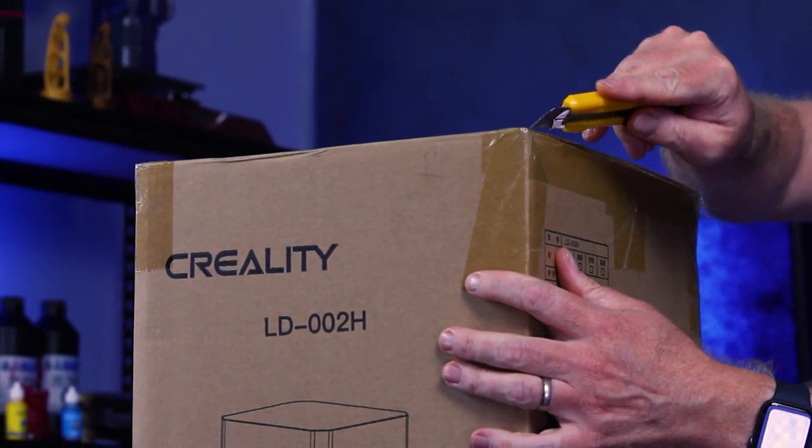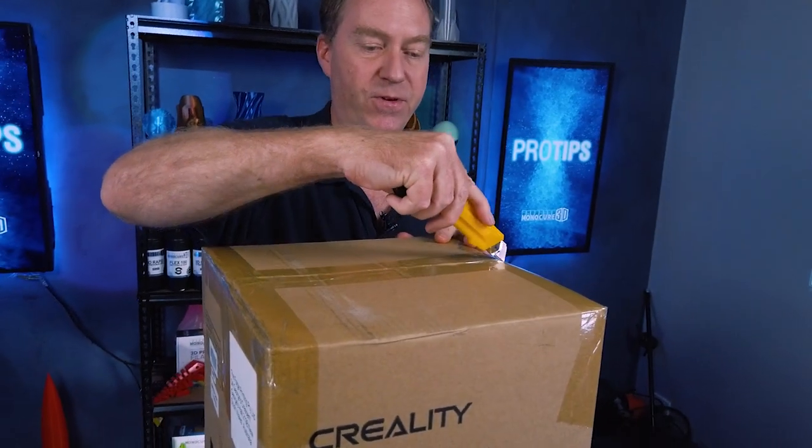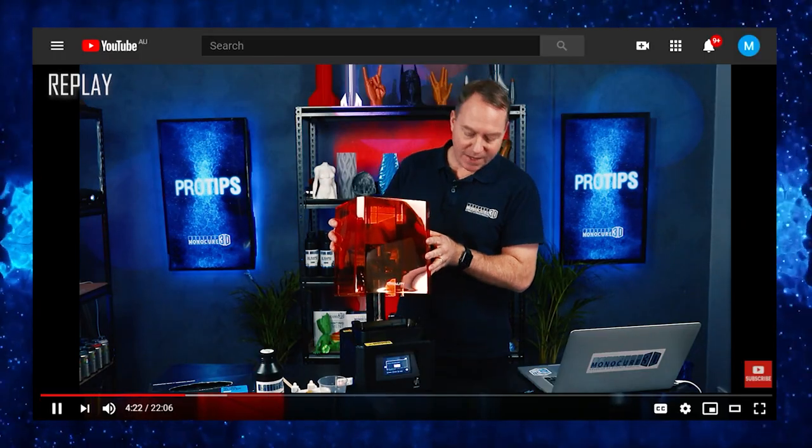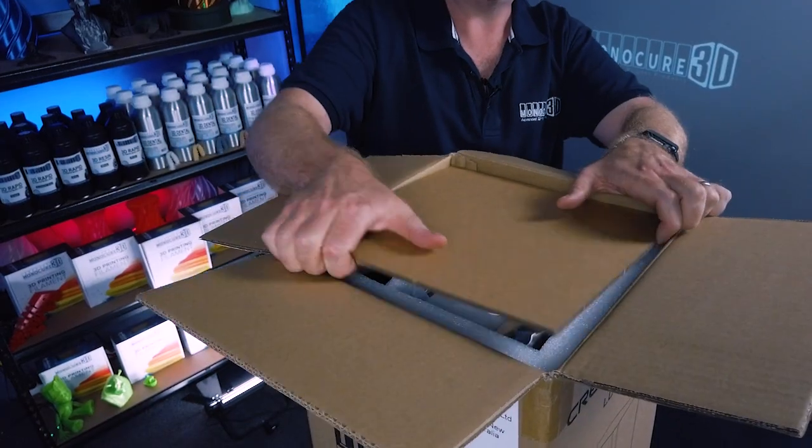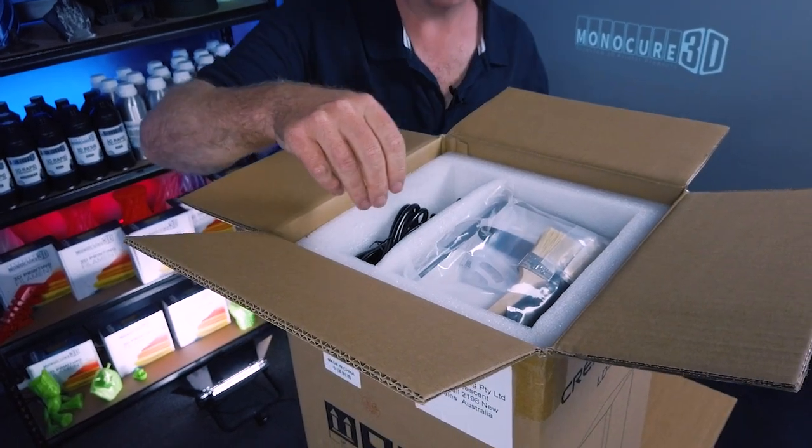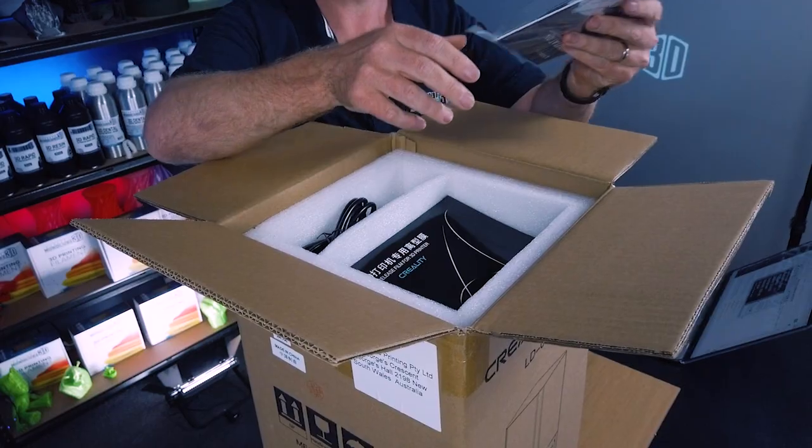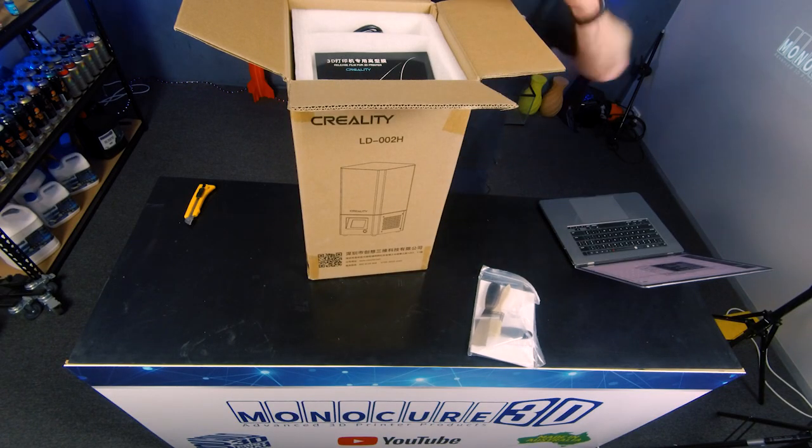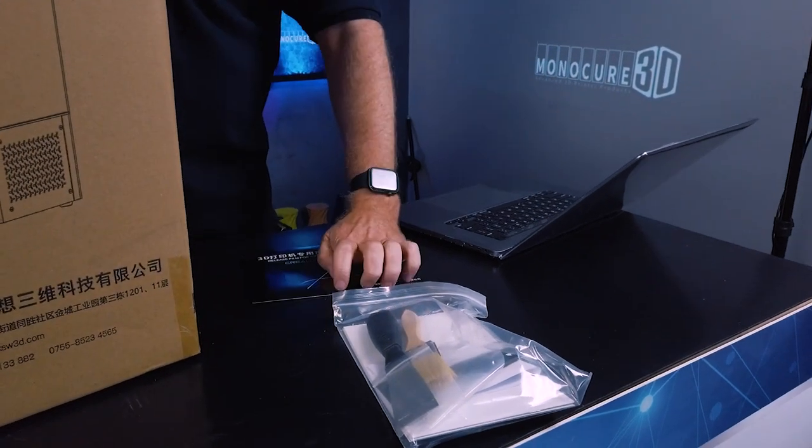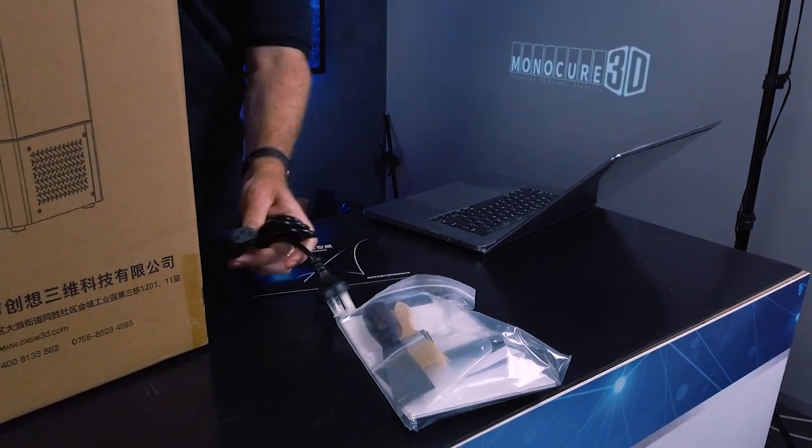Now from what I understand about this printer, it is very similar to its predecessor, the LD-002R. The difference is it has the monochrome screen which we're all very excited about. It comes with the standard tools, the FEP film, and a power cord.